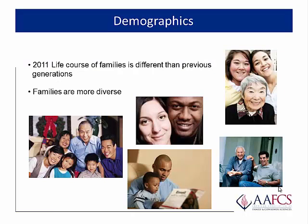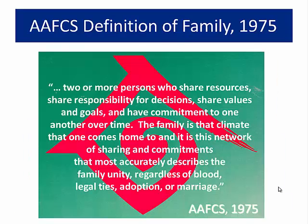The typical life course is different than in previous generations. U.S. families are diverse and continually changing. Let us now turn to the AAFCS definition of family: two or more persons who share resources, share responsibility for decisions, share values and goals, and have commitment to one another over time. The family is that climate that one comes home to — it is this network of sharing and commitments that most accurately describes family unity, regardless of blood, legal ties, adoption, or marriage. This was written in 1975. What do you think is still true today? What do you think needs to change?